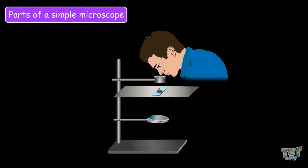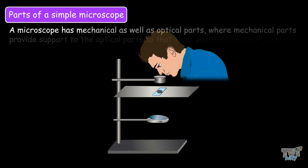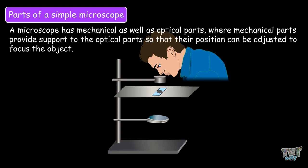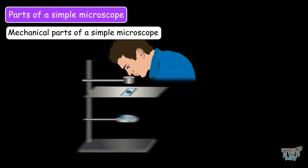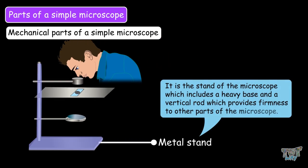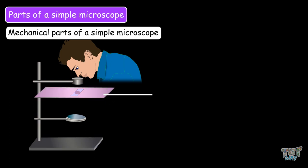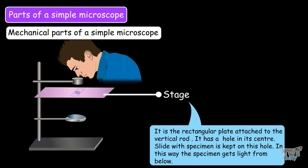Now let's learn the parts of this microscope. A microscope has mechanical as well as optical parts, where mechanical parts provide support to optical parts, so that their position can be adjusted to focus the object. Let's first learn the mechanical parts. Metal stand. It is the stand of the microscope, which includes a heavy base and a vertical rod, which provides firmness to the other parts of the microscope. Next is the stage. It is the rectangular plate attached to the vertical rod, and this stage has a hole in its center. The slide with the specimen is kept over this hole, and in this way the specimen gets light from below.